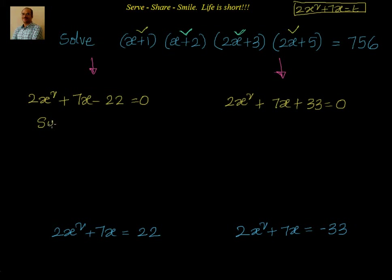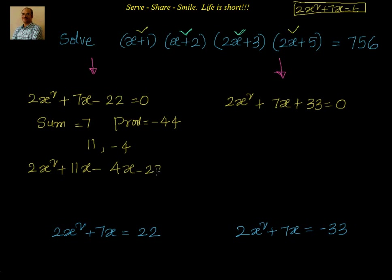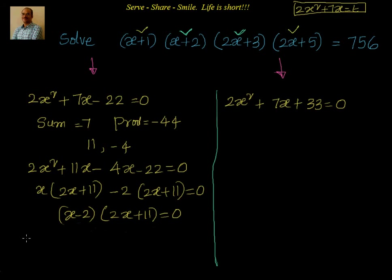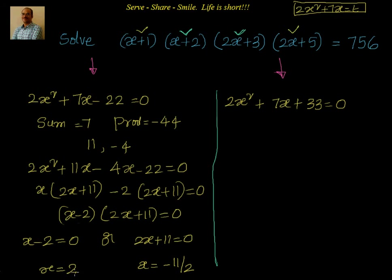For the first equation: 2x square plus 7x minus 22 equal to 0. Sum equals 7 and product equals minus 44, giving the pair 11 and minus 4. This factors as 2x square plus 11x minus 4x minus 22 equal to 0, or x into 2x plus 11 minus 2 into 2x plus 11 equal to 0. So x minus 2 into 2x plus 11 equal to 0, giving x equal to 2 or x equal to minus 11 by 2.